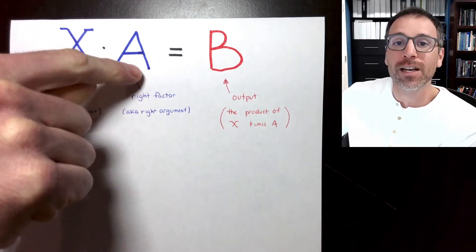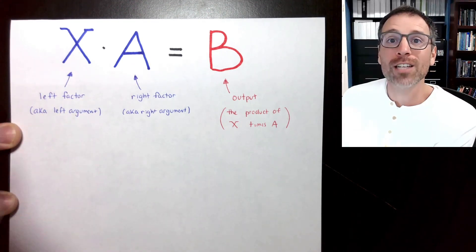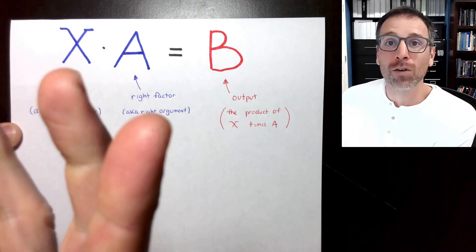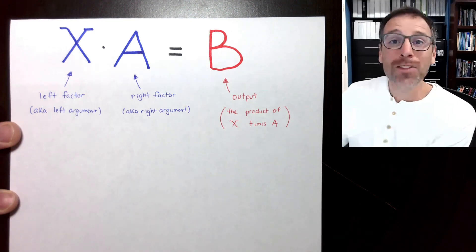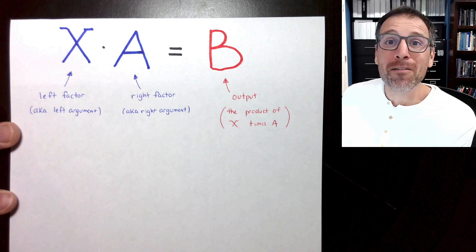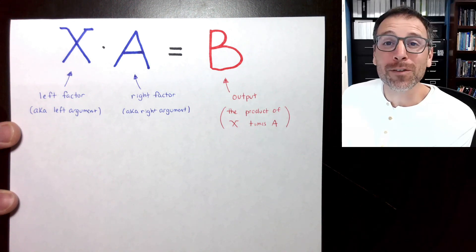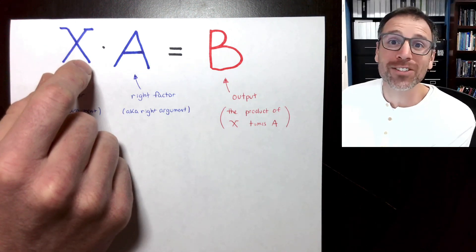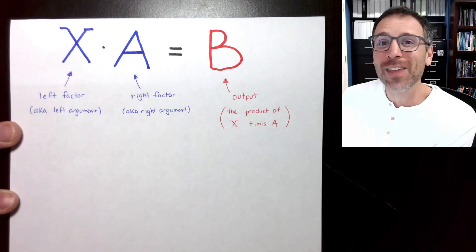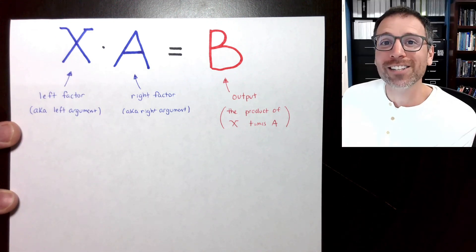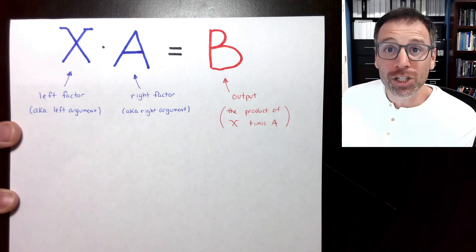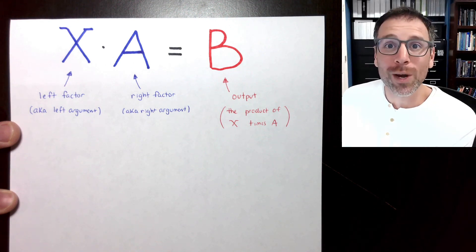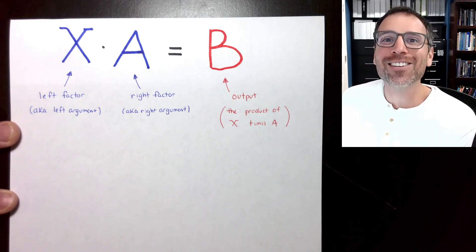We're going to see these ideas show up over and over moving forward in this class. If you want, put your answers in the comments so other viewers can read your ideas. We're going to get really good answers to that in the rest of this lesson. Thank you for your attention. In the next videos, we'll talk about definitions of matrix-matrix multiplication, different ways to do it, and then look at some examples.